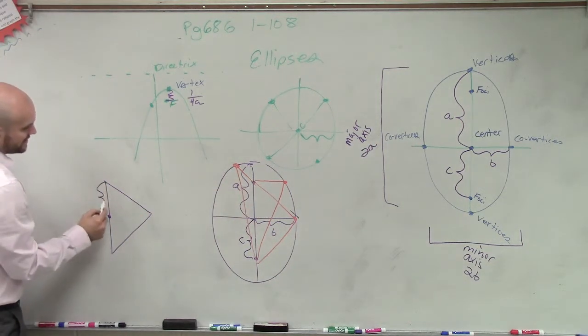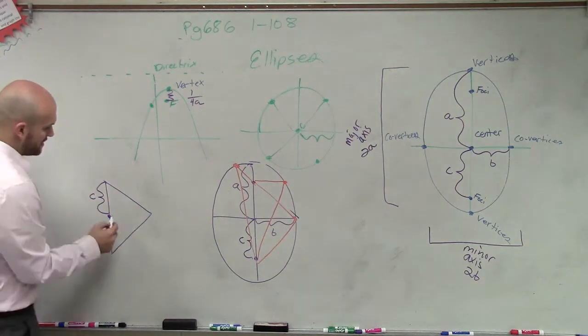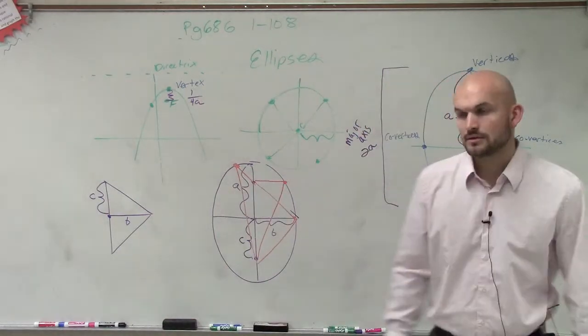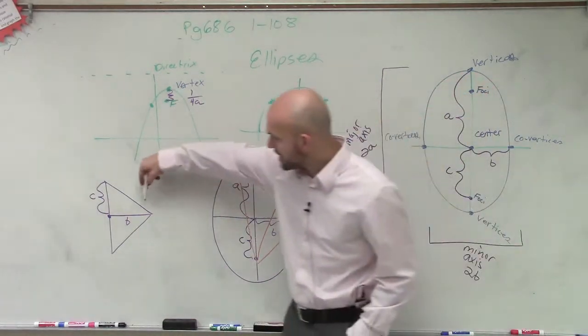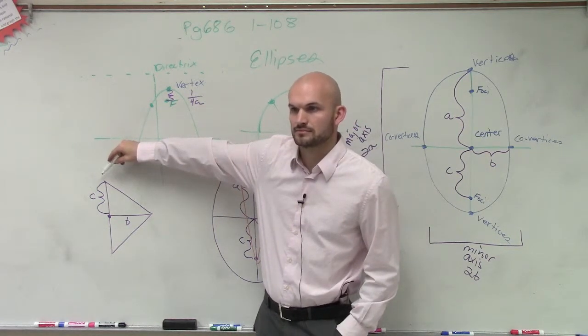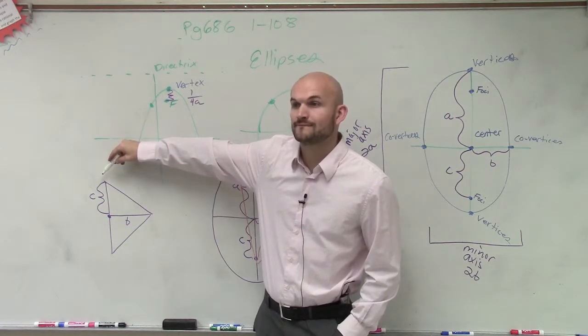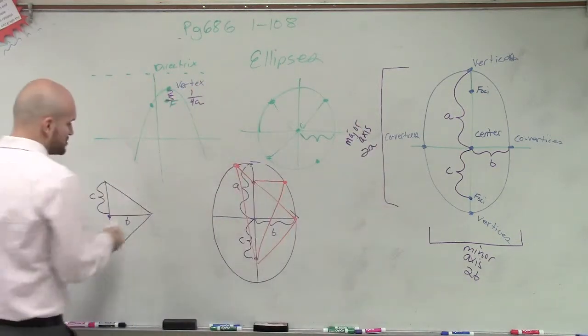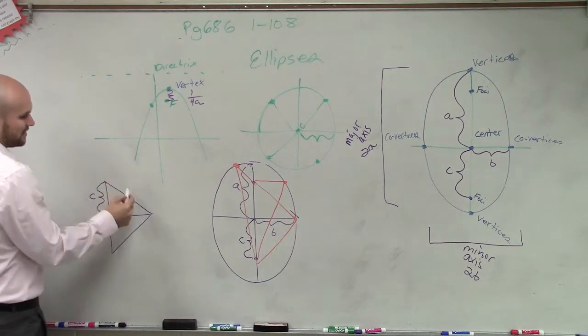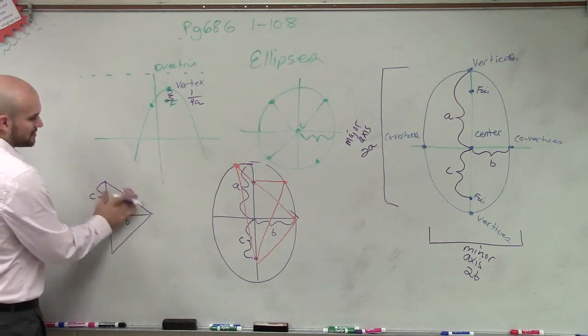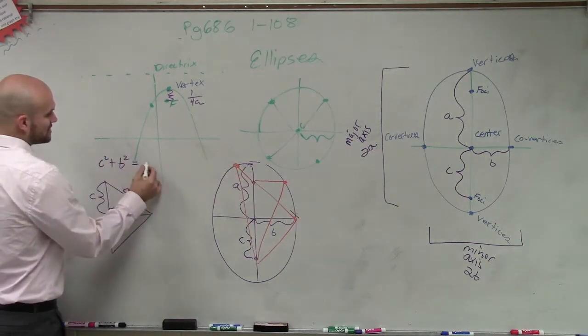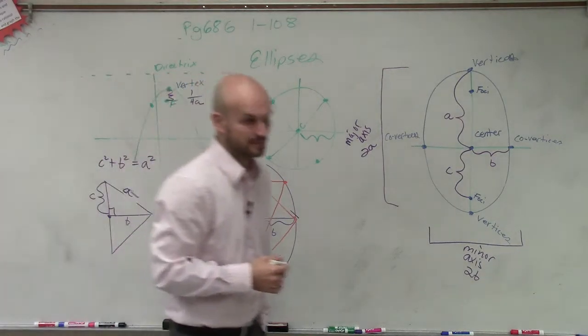We know that this distance is C, right? And then this distance is B, correct? Now, what if I want to figure out what is going to be this distance? Yeah, you're going to use Pythagorean theorem. So I can create a right triangle. So we could say let's call this A. So what you could say is C squared plus B squared equals A squared.